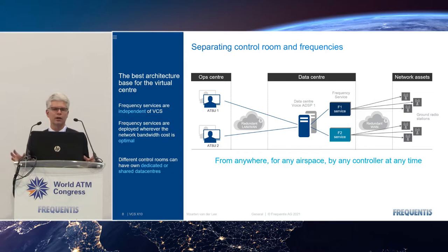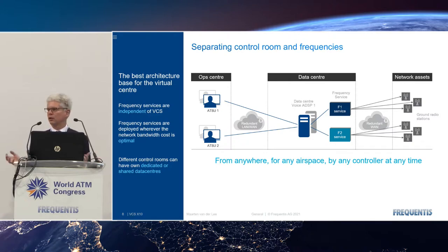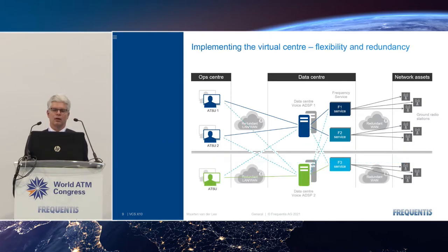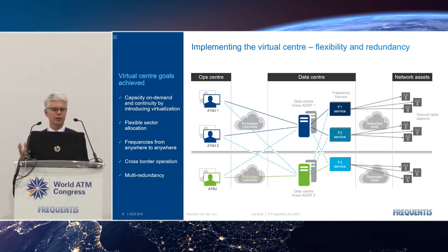We introduce services like a frequency service, which does everything a frequency consists of: calculating the BSS, dynamic delay compensation, main/standby switchover, and channel management. You can deploy such a service anywhere in your network, separating the radio infrastructure from the technology itself. We then introduce a second data center to create multi-redundancy, where it's possible to switch between data centers from the operator position.